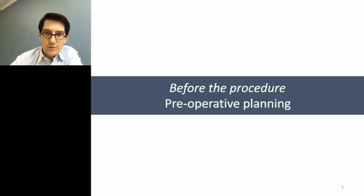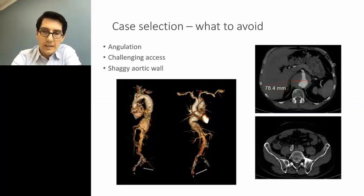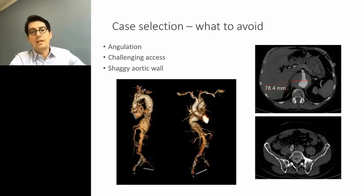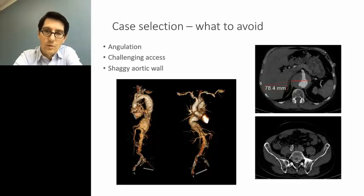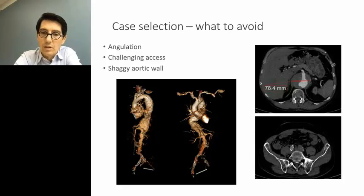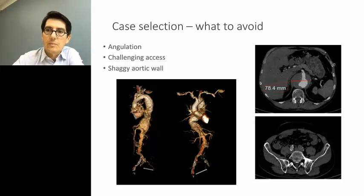Before the procedure, let's talk more specifically about the planning process. First, you need to select the right patient when using an endovascular approach. You can always push the envelope, especially with high experience in a high-volume center. But patients you might want to avoid at the beginning of your learning curve include those with very angulated aortic and iliac anatomy, patients with challenging access — for example, an occluded left iliac axis — and patients with a shaggy aortic wall, because this can lead to cholesterol emboli in the visceral arteries, renal arteries, and lower limbs, which can be catastrophic. Spending significant time on the workstation to perfectly select the patient is mandatory.